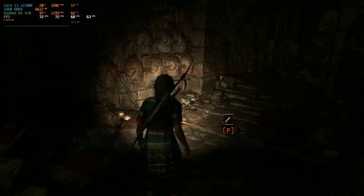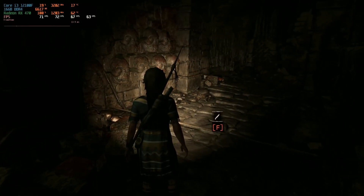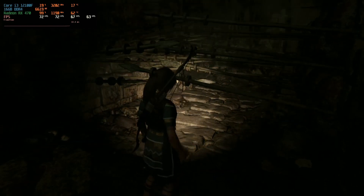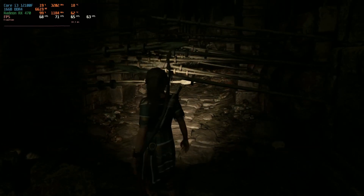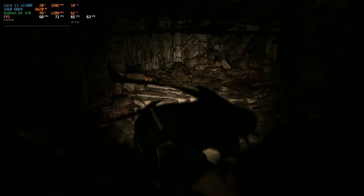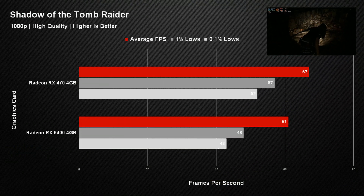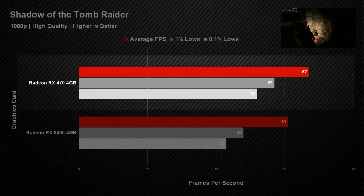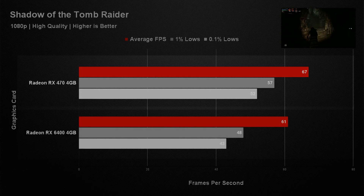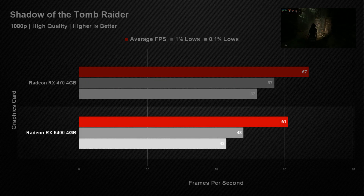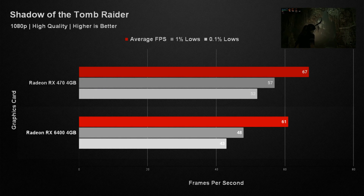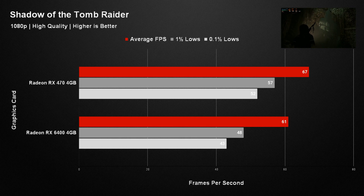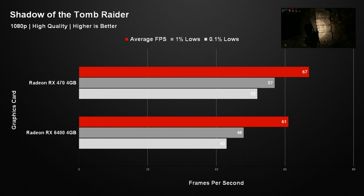The last game in our testing suite was Shadow of the Tomb Raider, another game that runs exceptionally well on AMD graphics cards. Just like some of the previous titles showed, the RX 470 still had some life left in it, beating the much newer RX 6400 by just 6 frames per second, which kind of made the RX 6400 look a little bit silly.